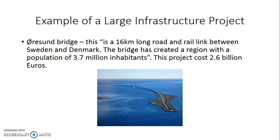This is an example of hard infrastructure called the Oresund Bridge, and it's a 16 kilometer long road and rail link between Sweden and Denmark. The bridge has created a region with a population of 3.7 million inhabitants and the project cost 2.6 billion euros. It's a massive and really good example of hard infrastructure.